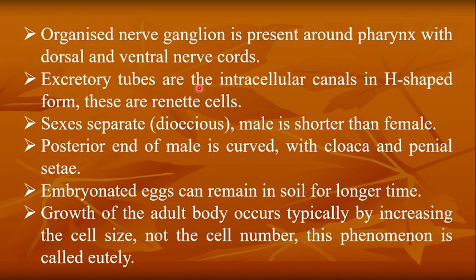The excretory system consists of intracellular canals in H-shaped form, known as rennet cells. This contrasts with Platyhelminthes where the excretory cells are flame cells; here they are rennet cells.